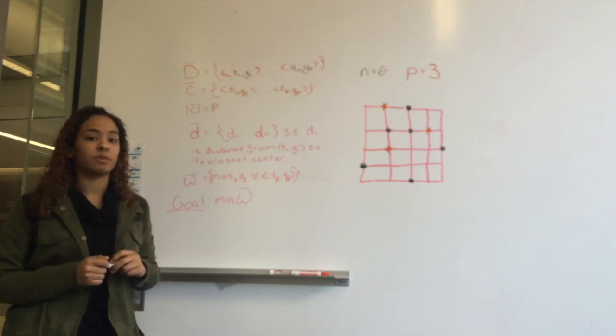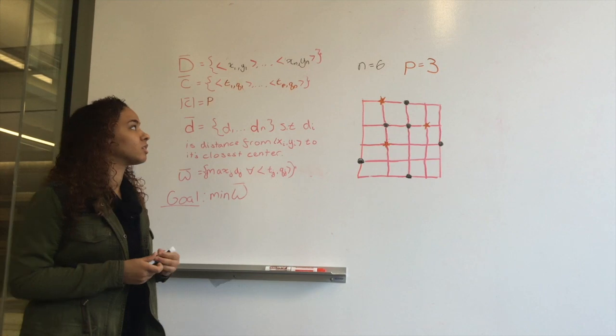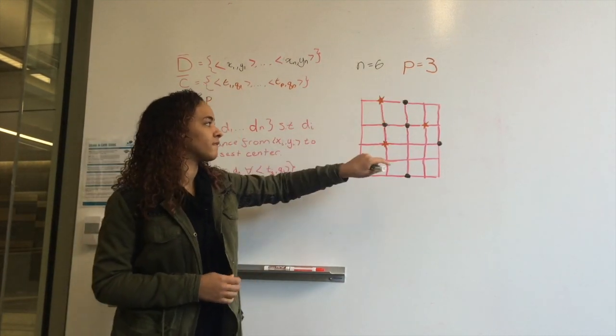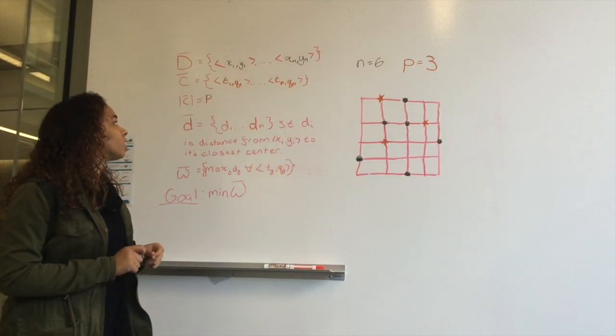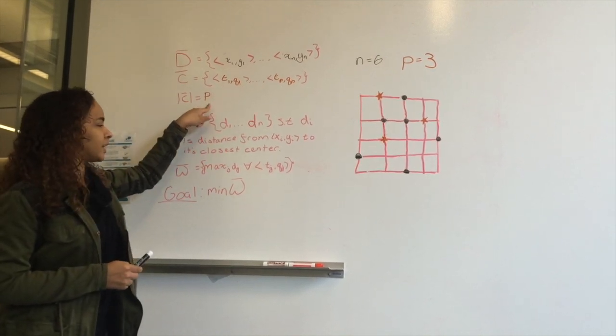Our next set will be the set C, and this will contain all of our center points. In this case, there will only be three points, our set number p: one, two, three. The size of our center set is going to meet the given number p.